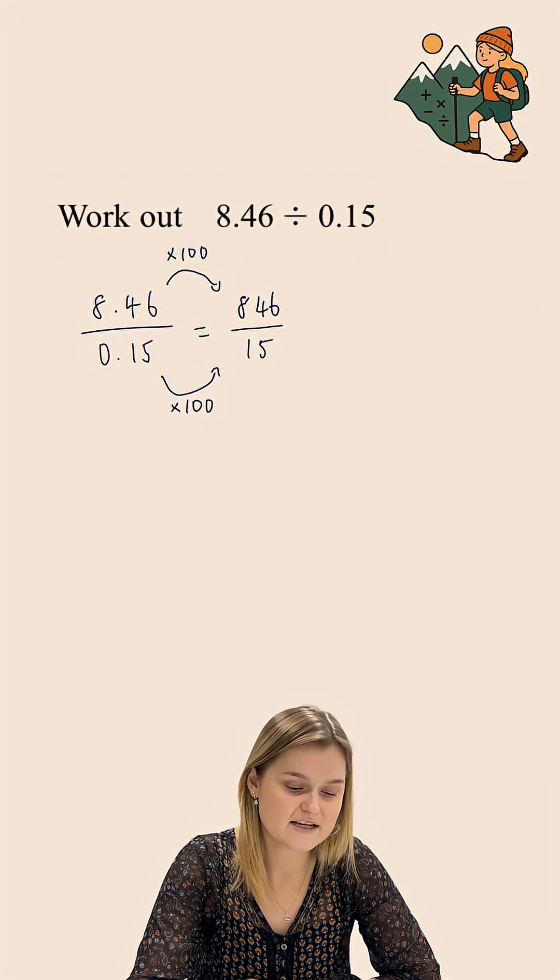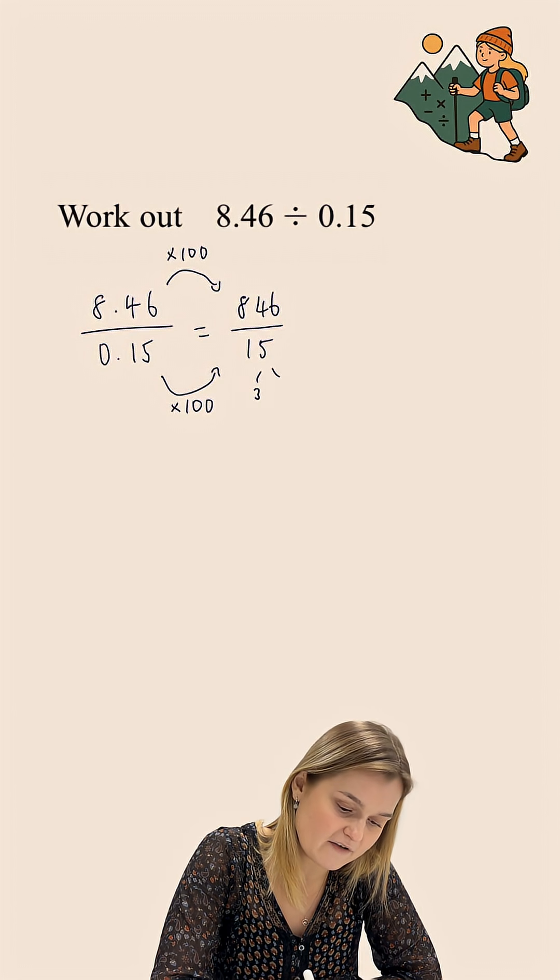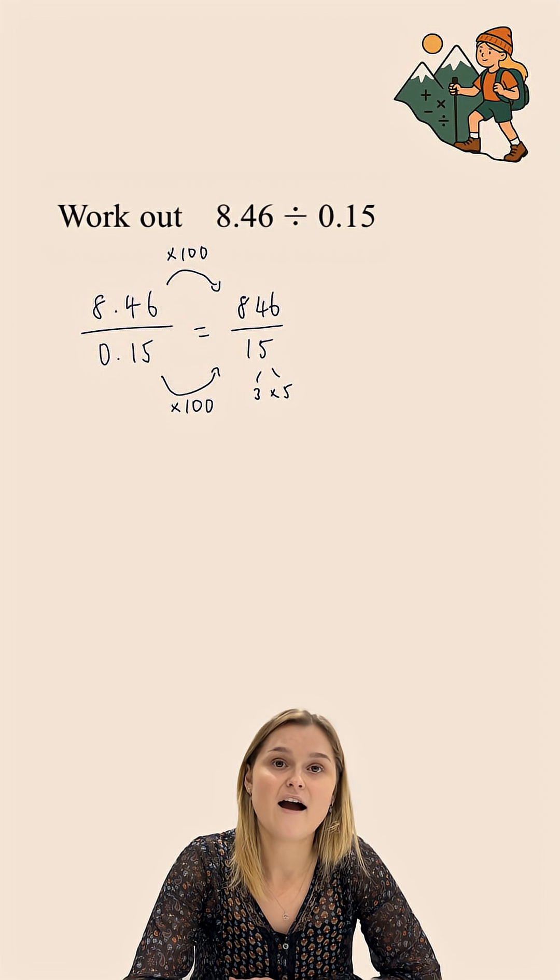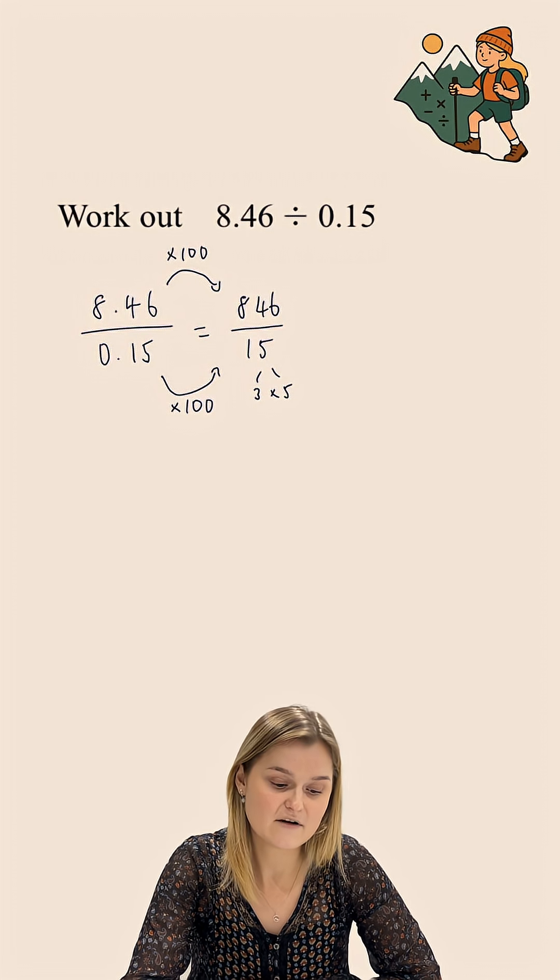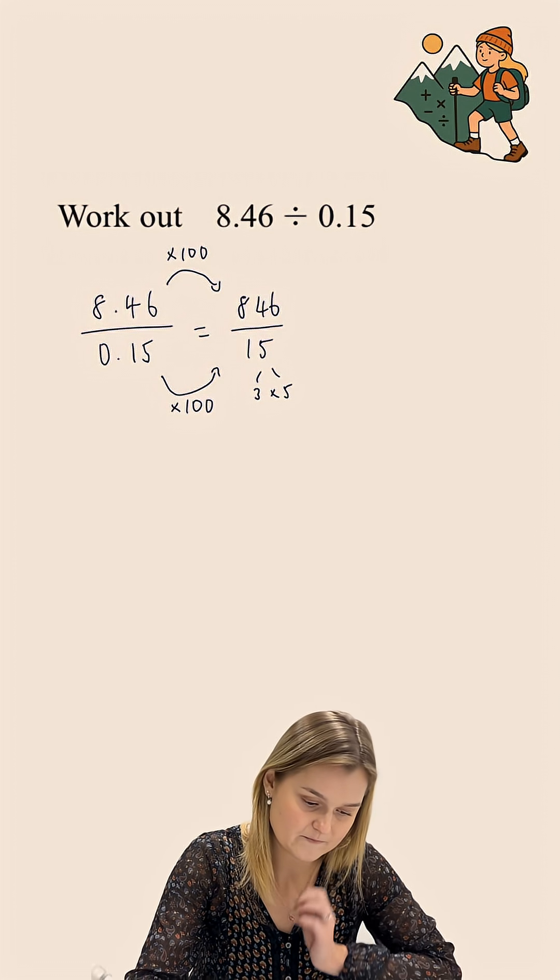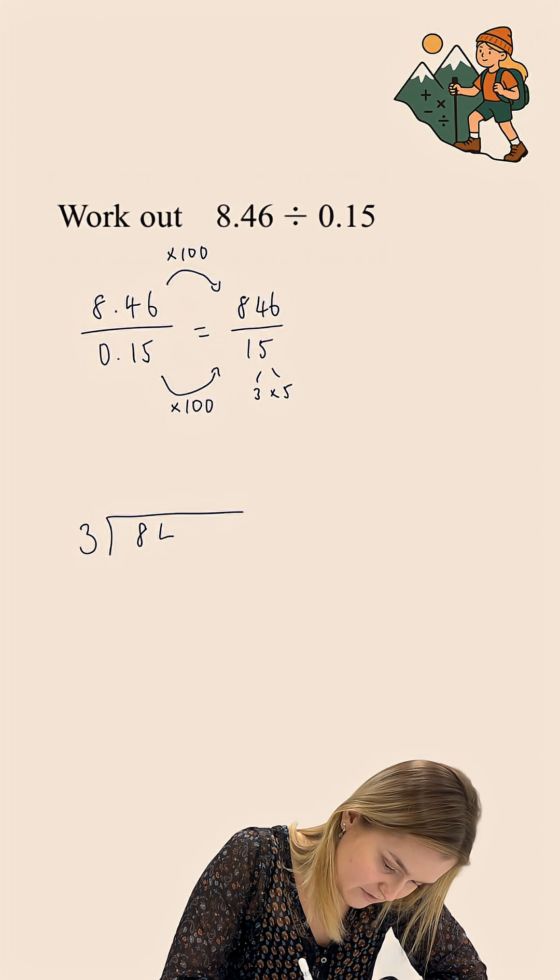Now I don't know my 15 times tables particularly well, and so I'm going to split this into 3 and 5. I can divide 846 by 3, get that answer, and then divide that answer by 5 rather than dividing by 15 all in one go. So starting off, I'm doing 846 divided by 3.